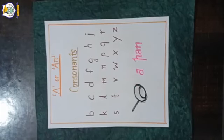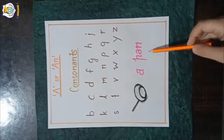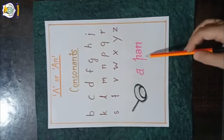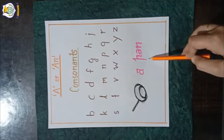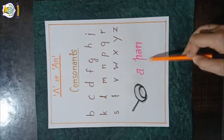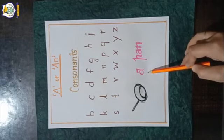The remaining letters of the English alphabet — other than A, E, I, O, U — are called consonants. When a word starts with a consonant or a consonant sound, we use 'a' before such words. For example, the word 'pan' starts with the consonant 'p' having a consonant sound 'per'. So we use 'a' before this word and say 'a pan'.